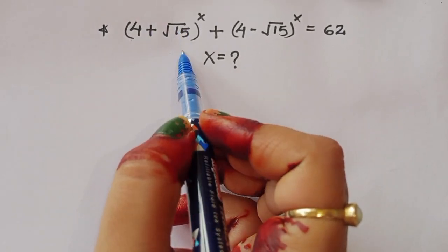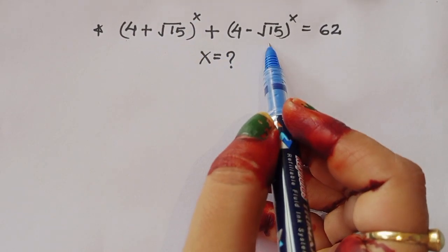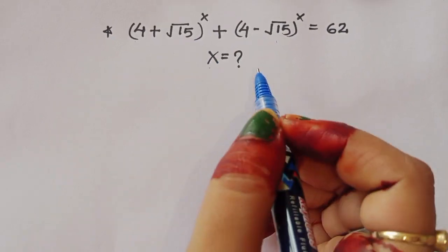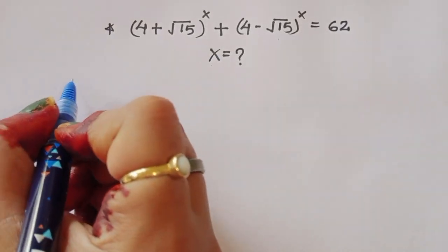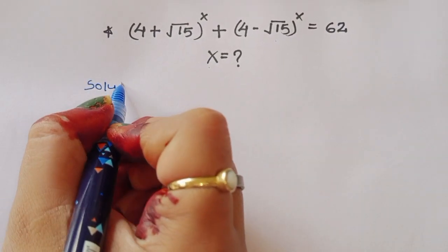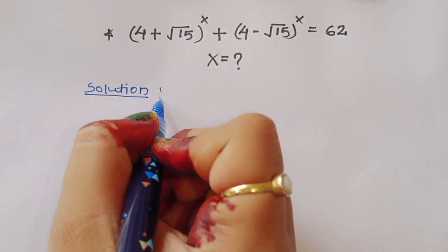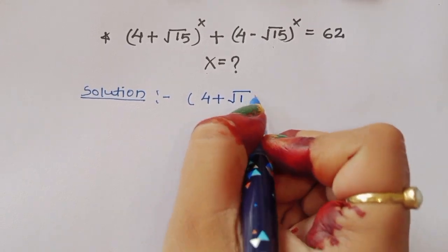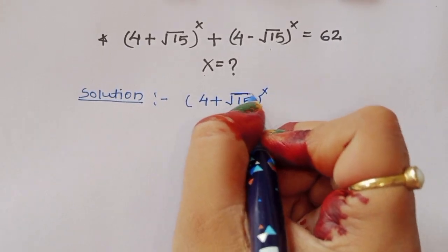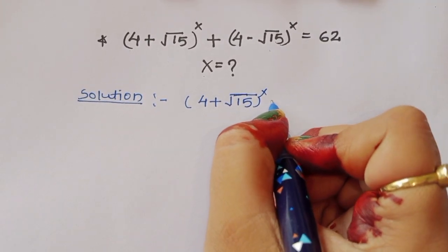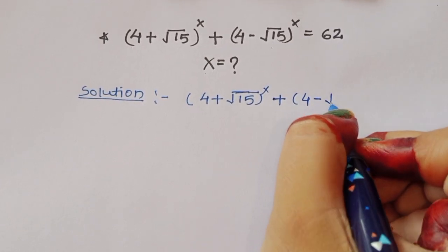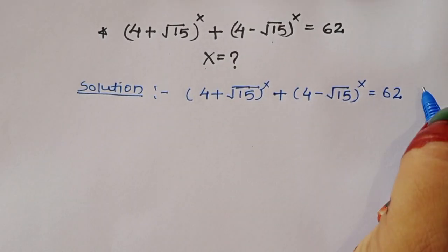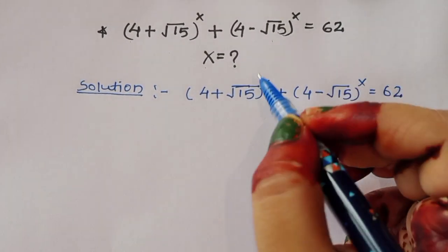The question is: given (4 + √15)^x + (4 - √15)^x = 62, we have to find out the value of x. Let's see the solution and how we can find out the value of x.